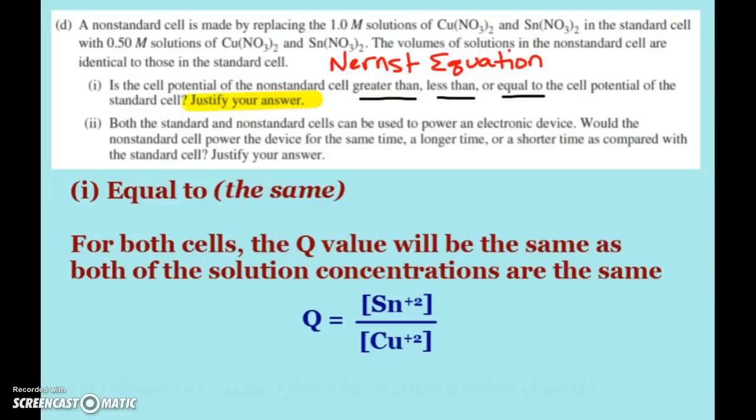And you can show, it would be nice of you to show Q is the tin over the copper. We always have our anode ion over the cathode ion. And again, you could pull out the Nernst equation and plug and chug and show that both of the E values are the same or show that however you want to mathematically. But this should be fairly obvious to us that if our Q value is not changing, then our cell potential is not going to change.